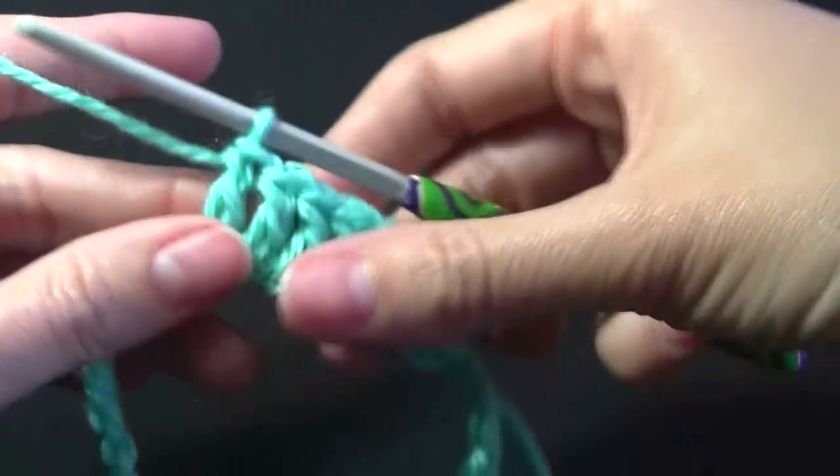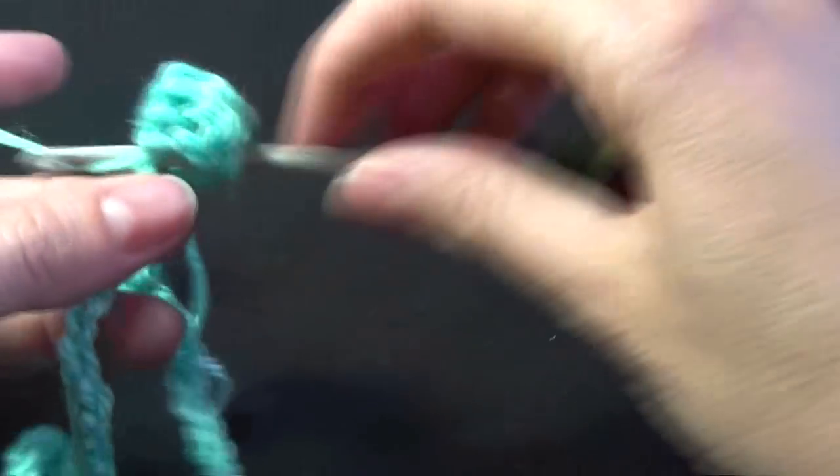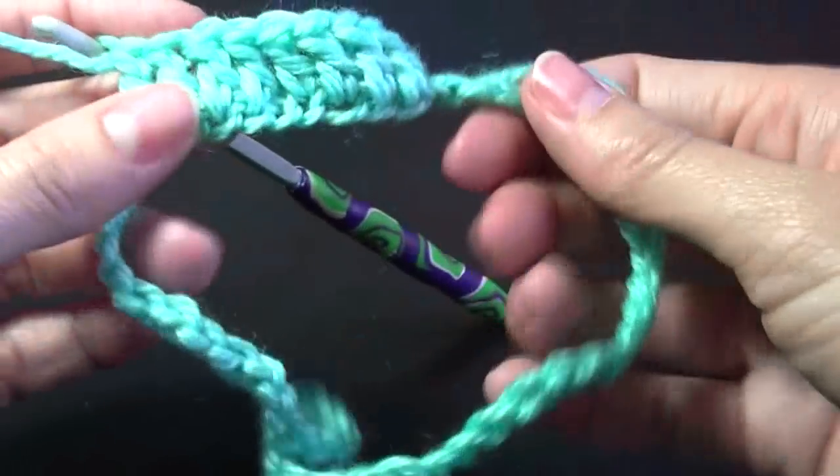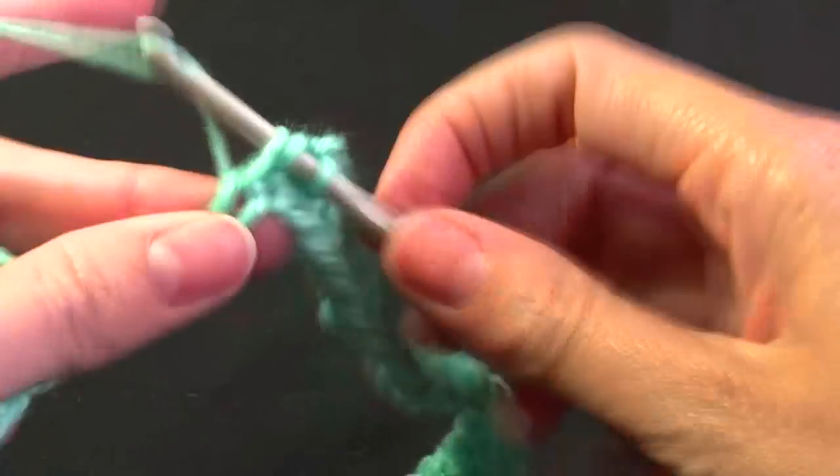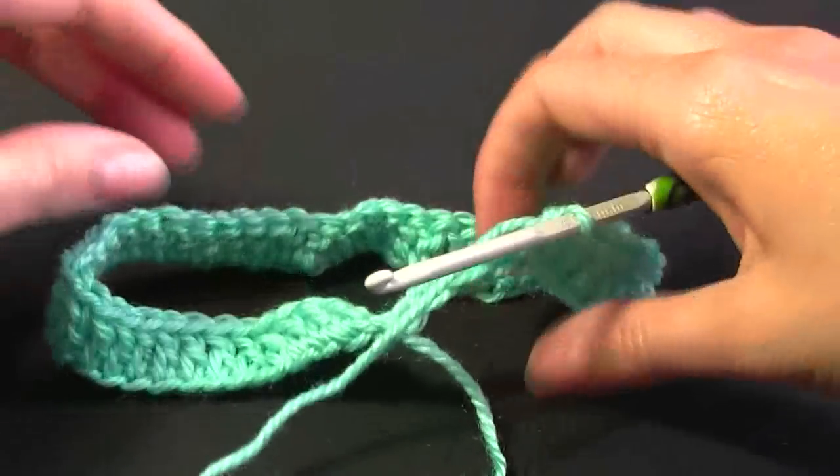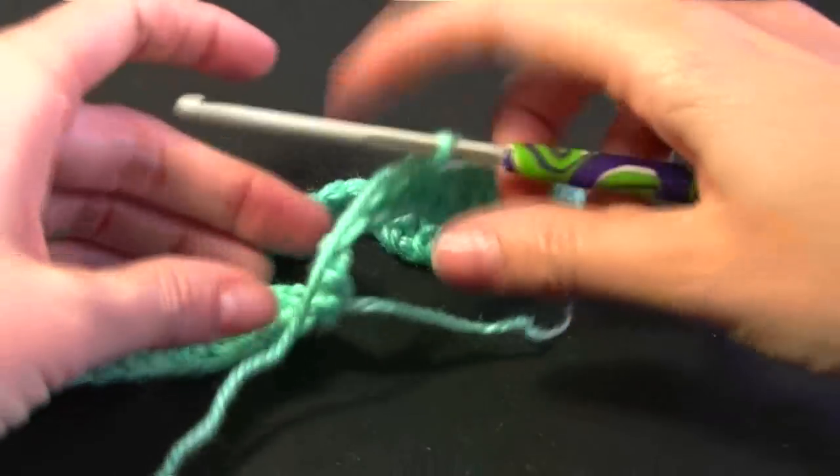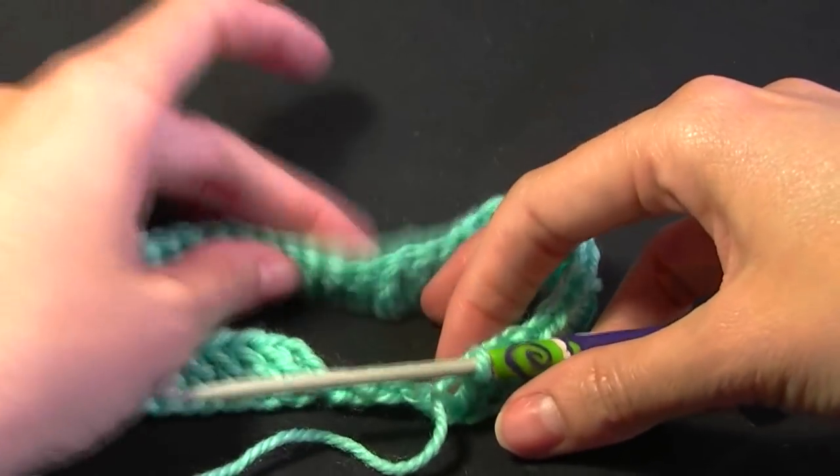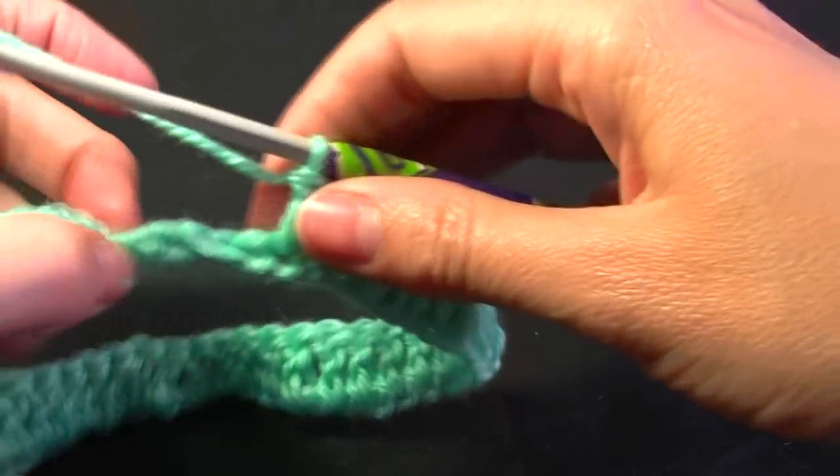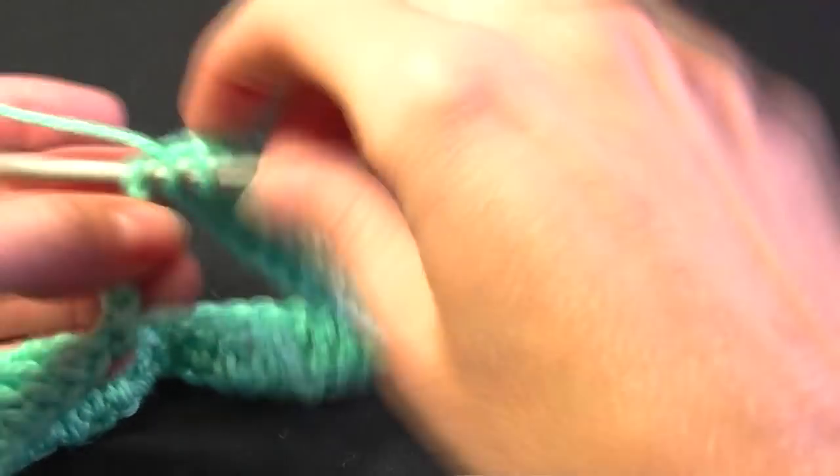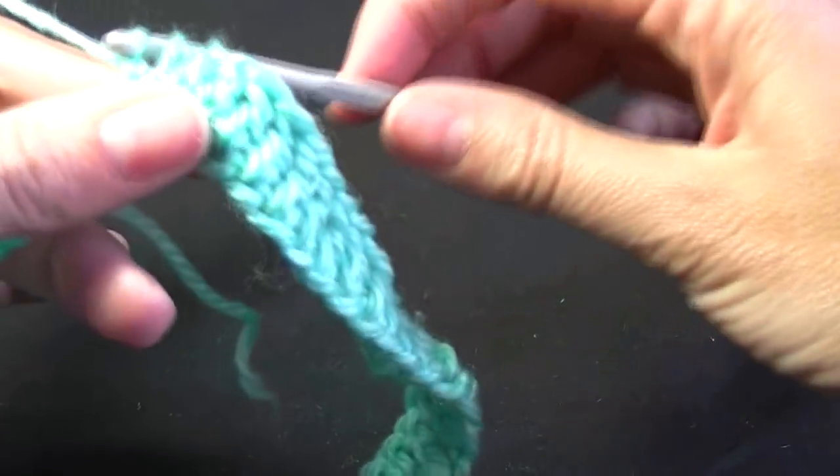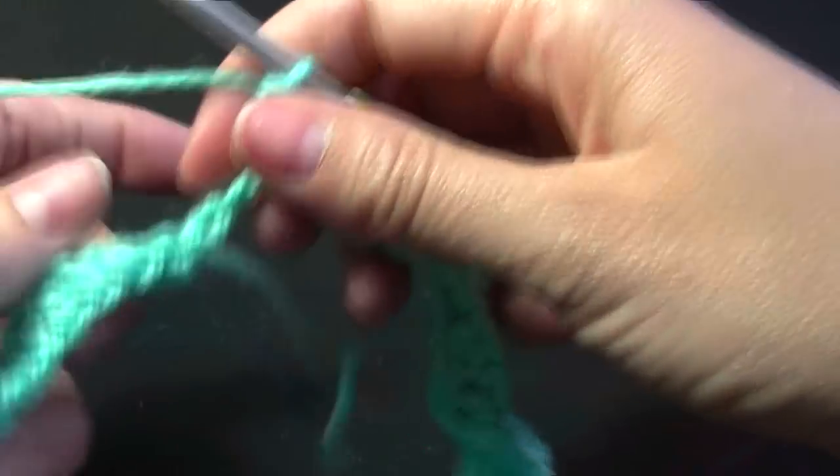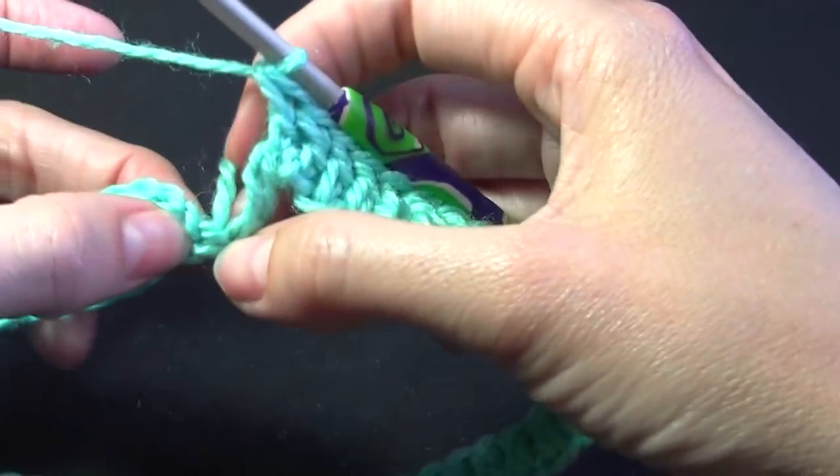So we're just doing one double crochet in each chain around. We're going to continue until you get back to the beginning. So when you come back around, if you have twisted your chain, when you look at your thing like this, your chain is going to be all twisted. But you can get around that just by going into the chain. Then when you get to like the last one or two, because I think mine is actually twisted. But this project is not really going to matter because this part actually gets gathered in. So when we get to the top, at the end of the row.